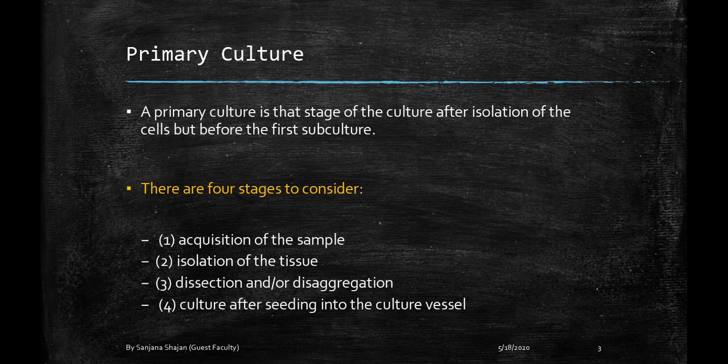After isolating the primary cell culture, cells are allowed to migrate from tissue fragments by attaching to a suitable substratum. Alternatively, tissues can be disaggregated mechanically or enzymatically to produce a suspension of cells. Crude enzymes are typically used for preparation and are found to be better than purified enzymes. Various mammalian enzymes like trypsin produced by different companies are used.